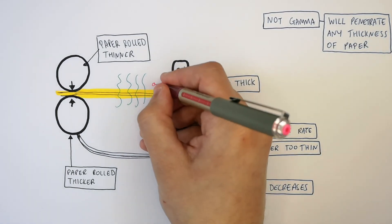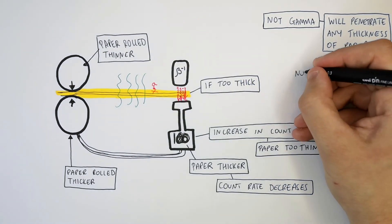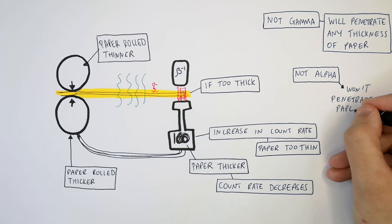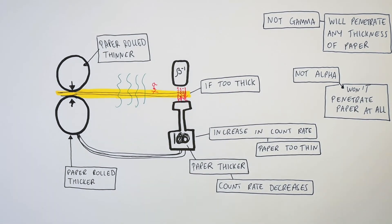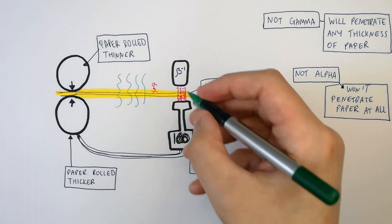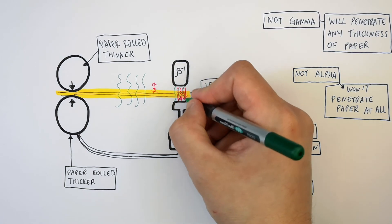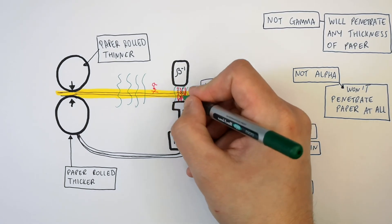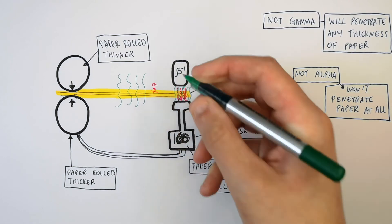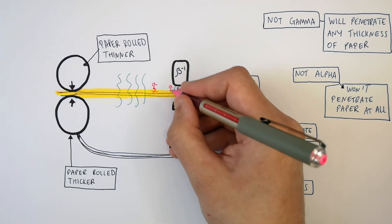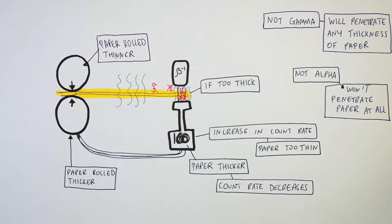And the reason why alpha particles are not used? Alpha particles will not penetrate the paper at all. As you can see, the alpha particles would not even reach the detector. Therefore, neither alpha particles nor gamma radiation is used to determine the thickness of paper — only beta radiation is suitable.